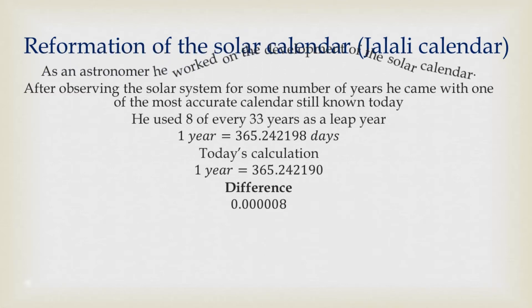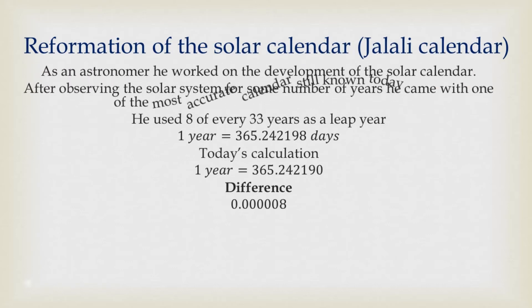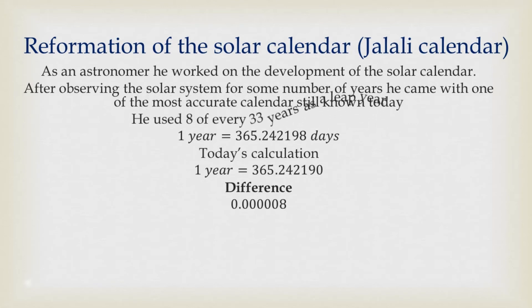He came up with a calculation where he uses eight of every 33 years as a leap year. He finally concluded that one year is 365.242198 days. In today's calculation by modern astronomers, they come up with a calculation of one year equal to 365.242190 days.